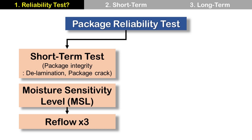Short-term test checks package integrity — how robust it is. It checks delamination, interfaces, and package cracks. It uses MSL, Moisture Sensitivity Level, for this. Sometimes it is also called MRT, Moisture Resistance Test. Then three times of reflow is followed.